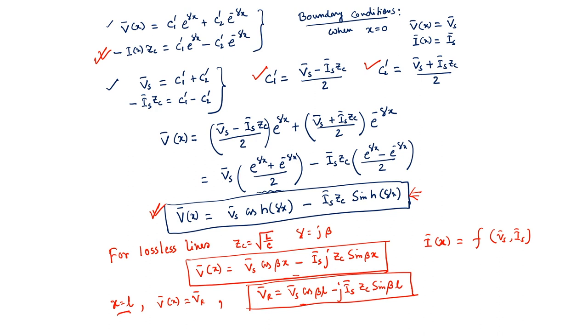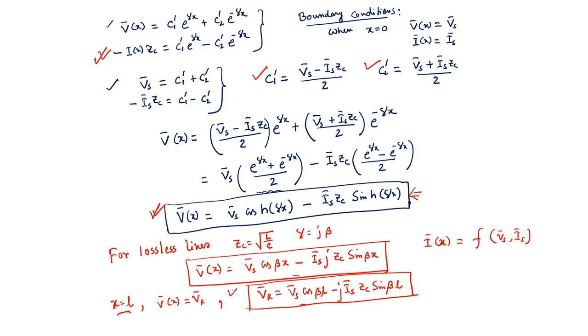The idea behind today's derivation is to show both relationships: the expression of Vr and Ir as a function of Vs and Is derived here, and the expression of Vs and Is as a function of Vr and Ir derived in the last lecture. Both expressions will be useful in deriving the power flow of the transmission line and will be used when discussing long transmission line compensation in future lectures. That is all for today's lecture. Thank you very much for your attention.